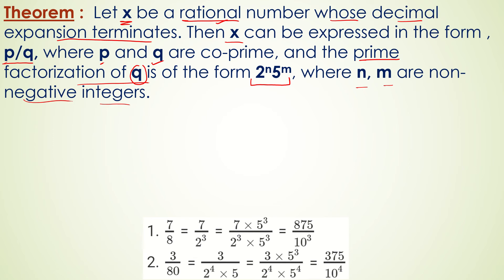See an example: 7 by 8. Here 8 can be written as 2 to the power 3. To convert to a power of 10, we multiply numerator and denominator by 5 to the power 3, giving us 875 upon 10 to the power 3. So we get the terminating decimal expansion 0.875.